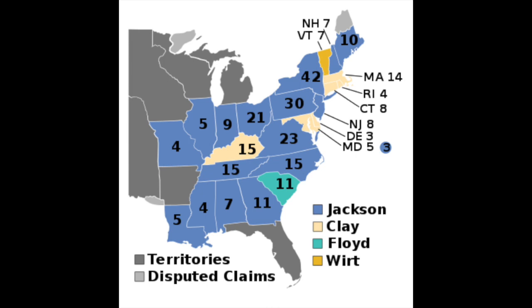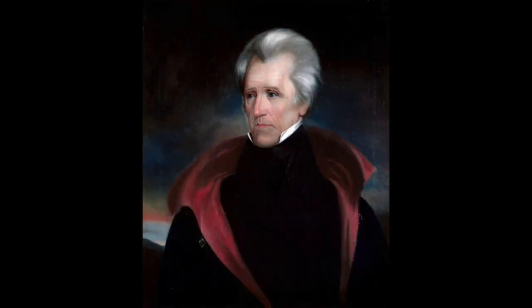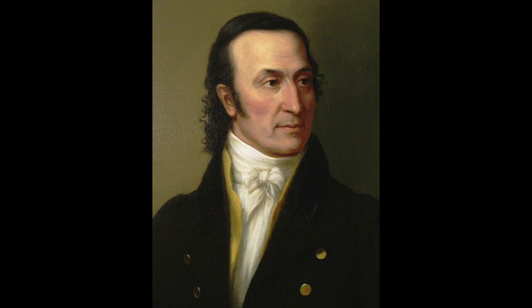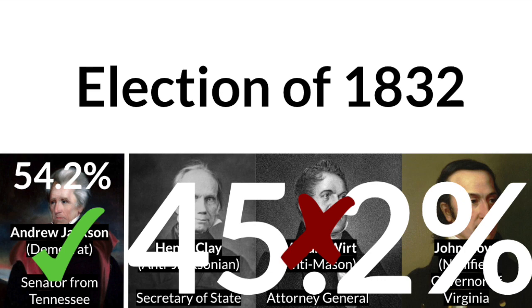Despite running as the Anti-Masonic nominee, Wirt refused to publicly criticize Freemasons, hoping instead that his candidacy would take enough votes away from Democrats that Andrew Jackson — seen by many Americans as a tyrant — would lose re-election. On top of that, South Carolina's delegates voted for Virginia Governor John Floyd, who believed states should be allowed to nullify federal laws. This idea was popular in the South, who wanted to preserve slavery. Jackson, though a slave-owning Southerner, opposed nullification, and the Nullifier Party was formed against him. But all these parties opposing Jackson weren't enough — they split the anti-Jackson vote, making his victory easier, and even combined, it still would have been a Jackson landslide.